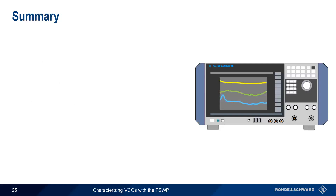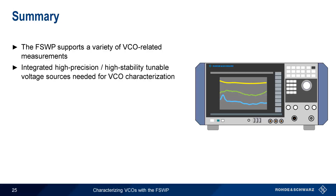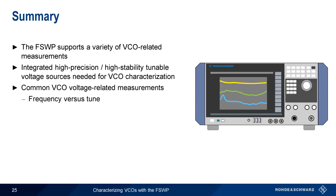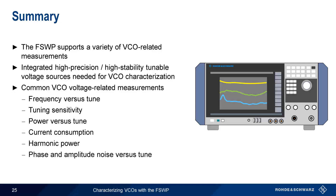Let's end with a brief summary. The Rohde & Schwarz FSWP Phase Noise Analyzer supports a variety of VCO-related measurements by means of highly precise and highly stable integrated voltage sources. Some of the more important VCO measurements supported by the FSWP include frequency versus tune, tuning sensitivity, output power versus tune, current consumption, harmonic power, and both phase and amplitude noise as a function of tuning voltage. This concludes our presentation, Characterizing VCOs with the FSWP. If you'd like to learn more about characterizing voltage-controlled oscillators or analyzing phase noise, please see the links in the video description. Thank you.